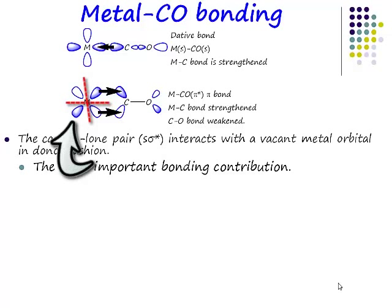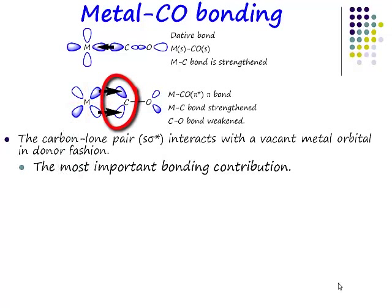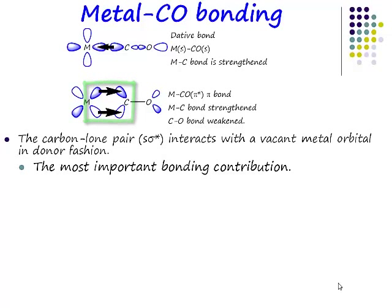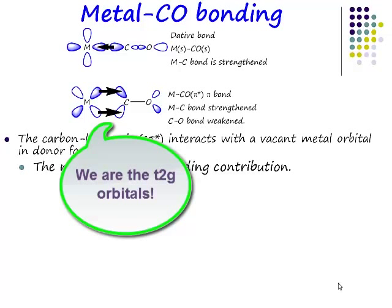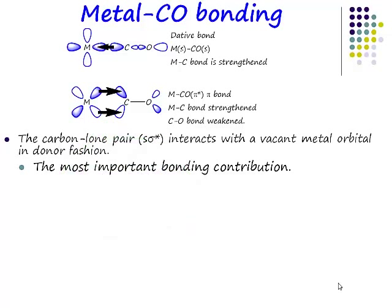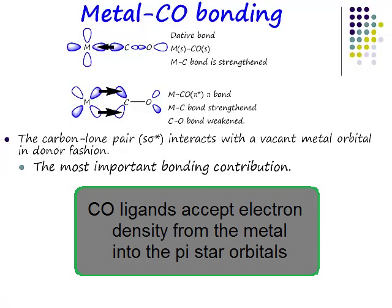This is DXY. DXY doesn't point along the axes, it points between the axes. So if this is pointing between the axes, and these lobes are pointing between the axes, they have the right symmetry to overlap with constructive phase, so they can form a new molecular orbital. These are the T2G orbitals, and these T2G orbitals are occupied with electrons. However, the π* orbital is not occupied with electron density — and this is what's special about carbon monoxide ligands.